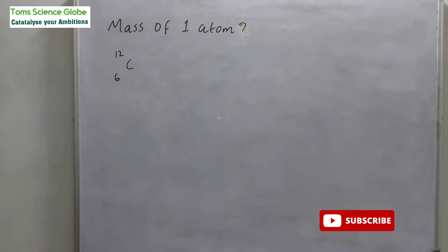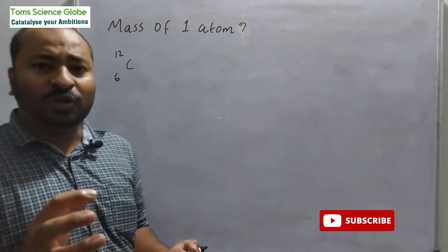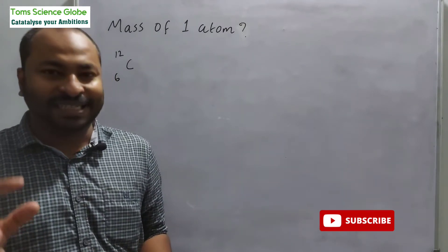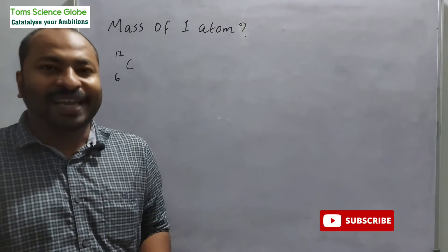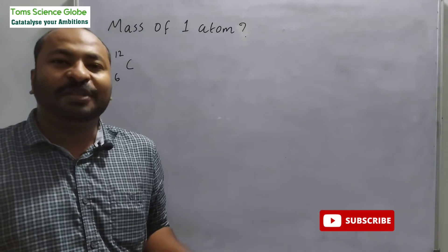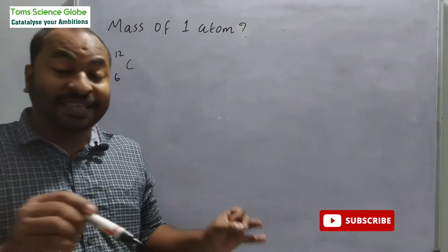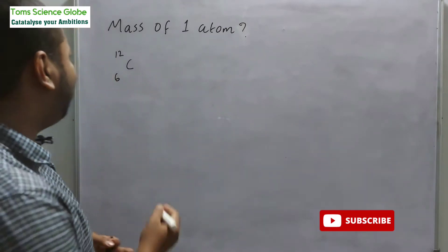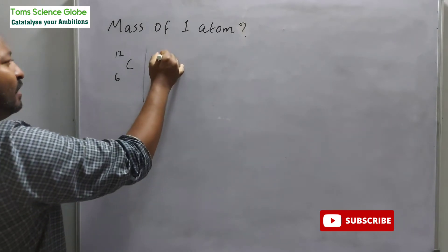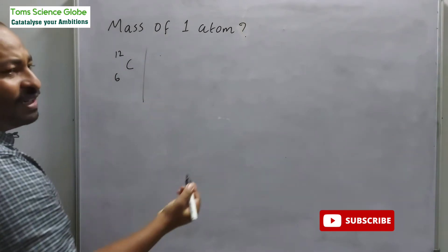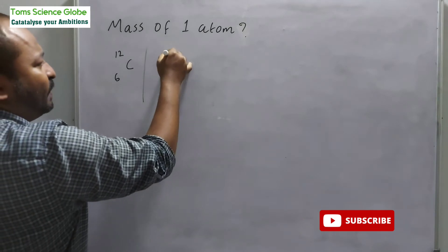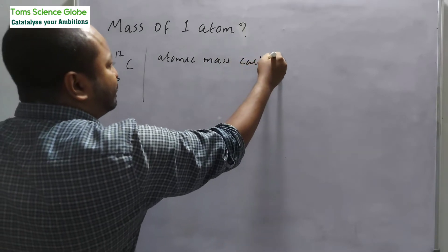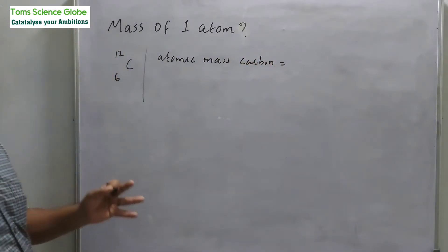The atomic mass of carbon — we say it is 12. That is, the atomic mass of carbon is 12.